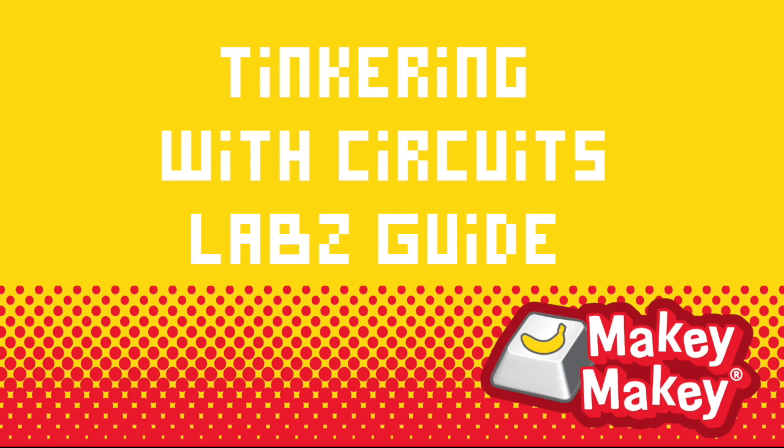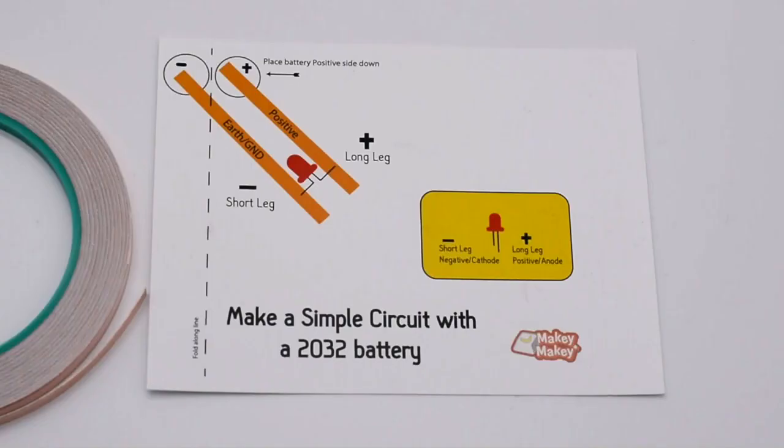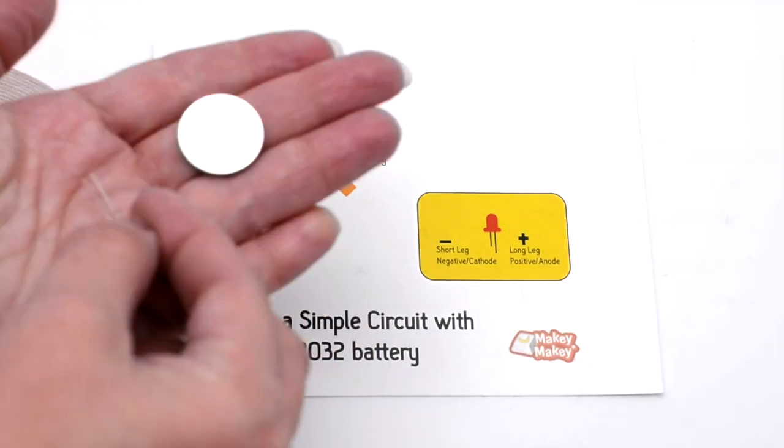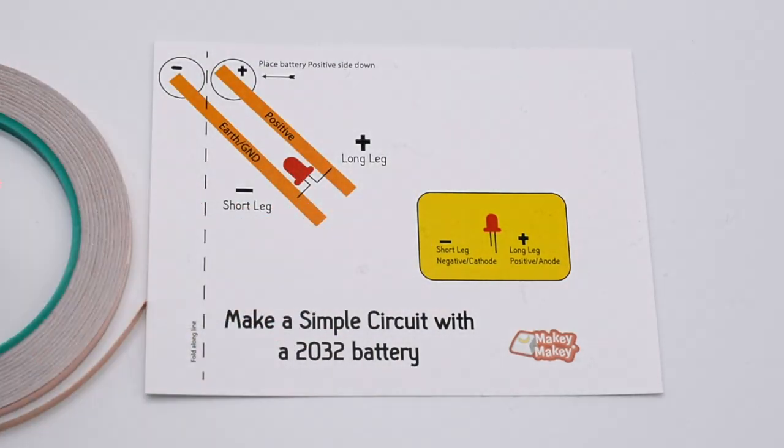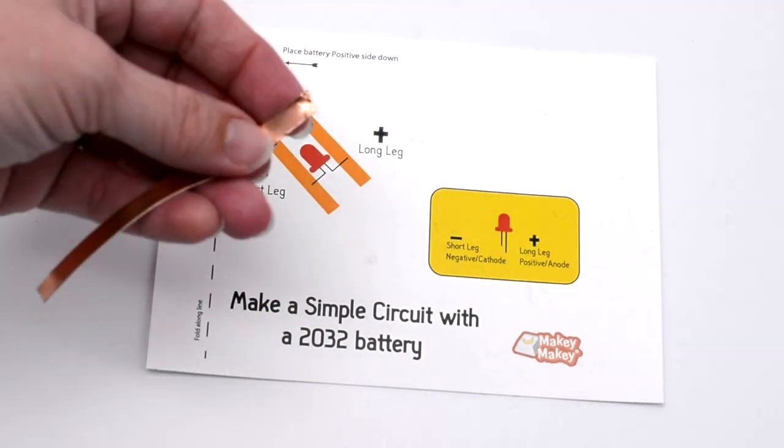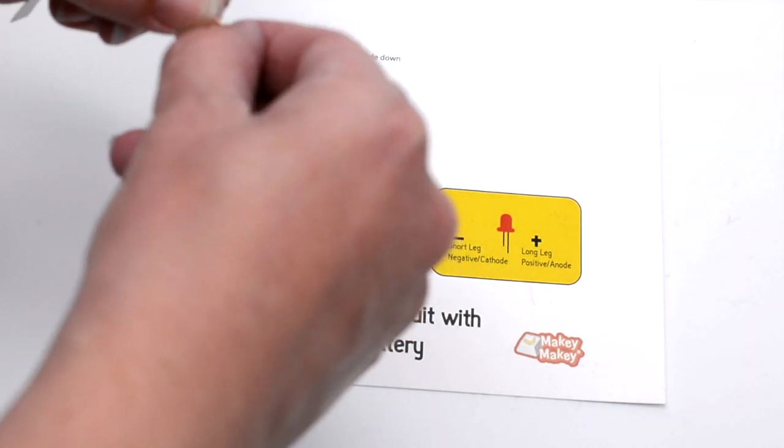I'm going to show you how to make a simple circuit with a battery and a switched simple circuit with Makey Makey. The first thing you're going to want to do is test your LED on a battery. You don't want to make a paper circuit and not have the LED working.